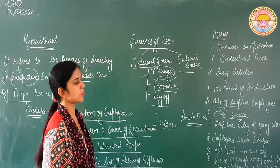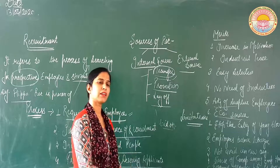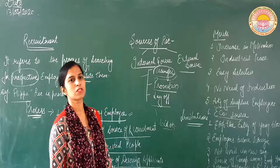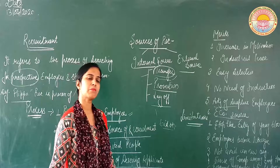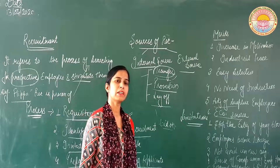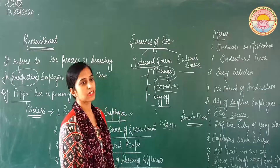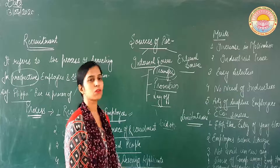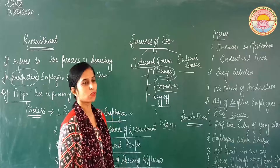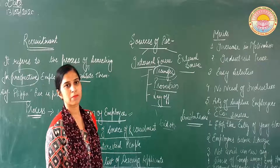Ab iske limitations hain. Sabse first point hai: stop the entry of young blood. Dekho, jab hum organization mein apne employees ko internally hi recruit kar rahe hain, internally unko promote kar de rahe hain, ek department se doosre department pe ya ek shift se doosari shift mein transfer kar rahe hain, toh jo bahar ke young blood hain unki entry toh hamari organization mein bilkul stop ho jayegi. Aur jab hamari organization mein young blood — jo young generation hai, jo nai technology ke saath aa rahe hain — unka aanaa band ho jayega, that means jo creativity hai, jo nai ideas hain, nai thinking hai, woh toh bilkul band ho jayegi.